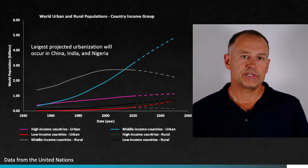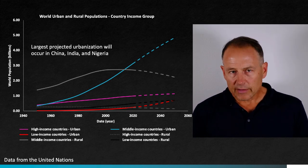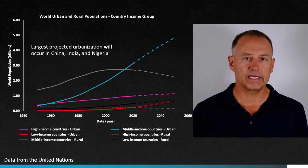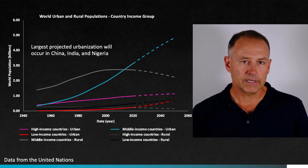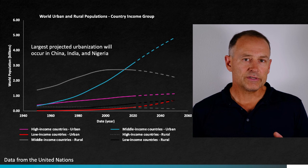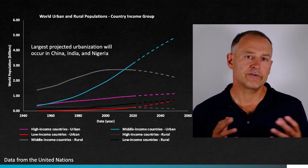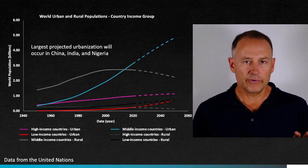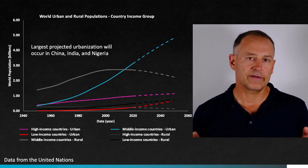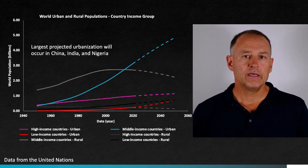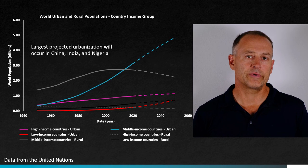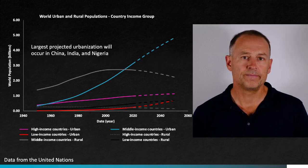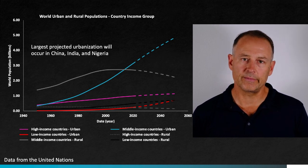The patterns on this graph show a complex set of changes across different types of economies. One simple way to distinguish countries is by income level. High-income countries include places like the United States and Europe. China is a good example of a middle-income country, which can be a mix of high-income settings and much lower-income rural settings. Low-income countries include many Sub-Saharan African countries and a handful of South Asian countries. The high-income countries have had a steady but not dramatic increase in urban population, shown by the pink line, though their total population is much lower than that of middle and low-income countries.